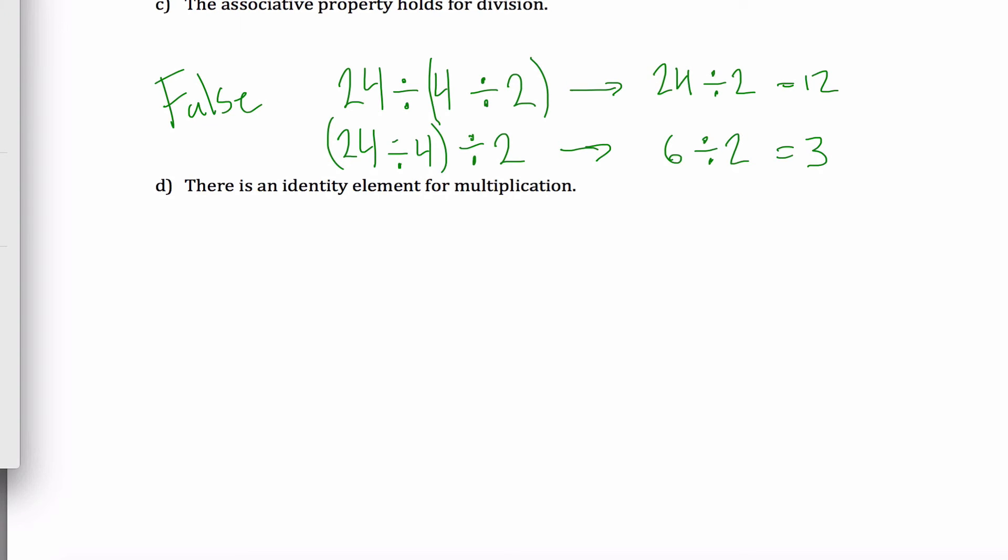There is an identity element for multiplication, sure is. One times any number is the same as any number times 1, which is equal to that number or any number A. There is an identity element for multiplication, it's the number 1, and this is the definition for it.